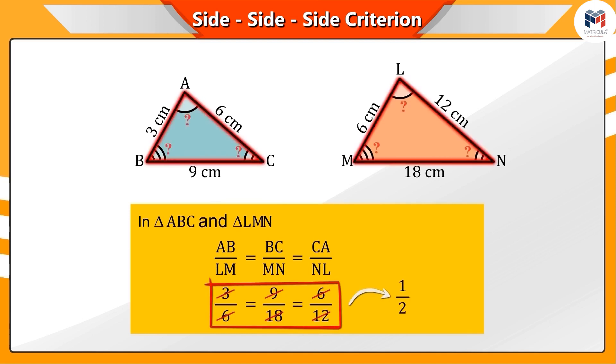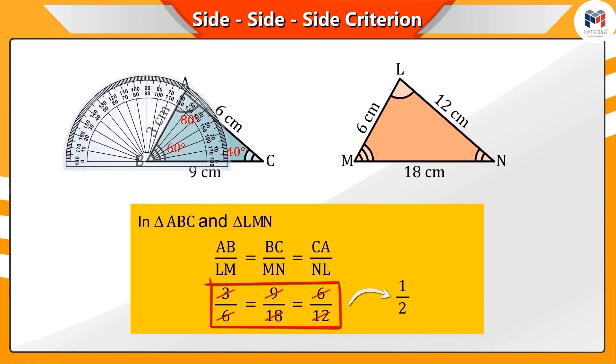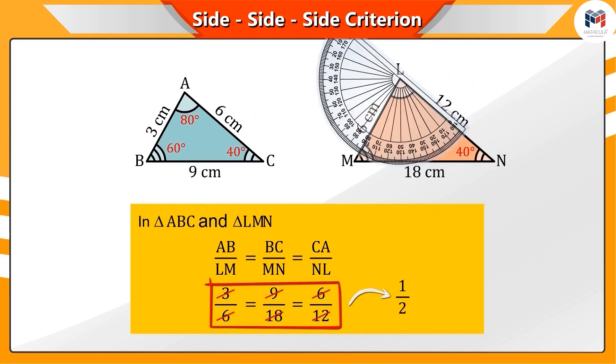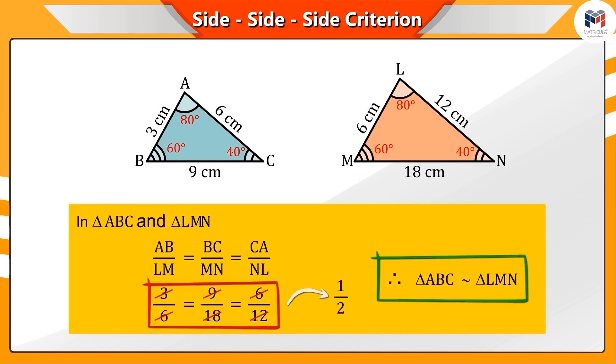Now, what can you say about the angles of these two triangles? Yes, if you measure, then you will see that the corresponding angles are equal. By this, we can see that triangles ABC and LMN are similar to each other.